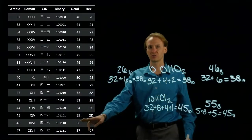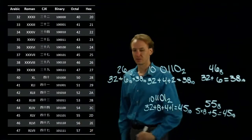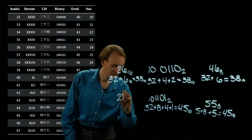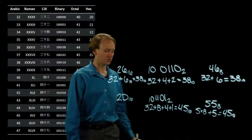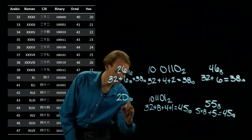In hexadecimal, though, that number is 2d. So, now I'll have some more work to do. So, d in hexadecimal is 13 in decimal.